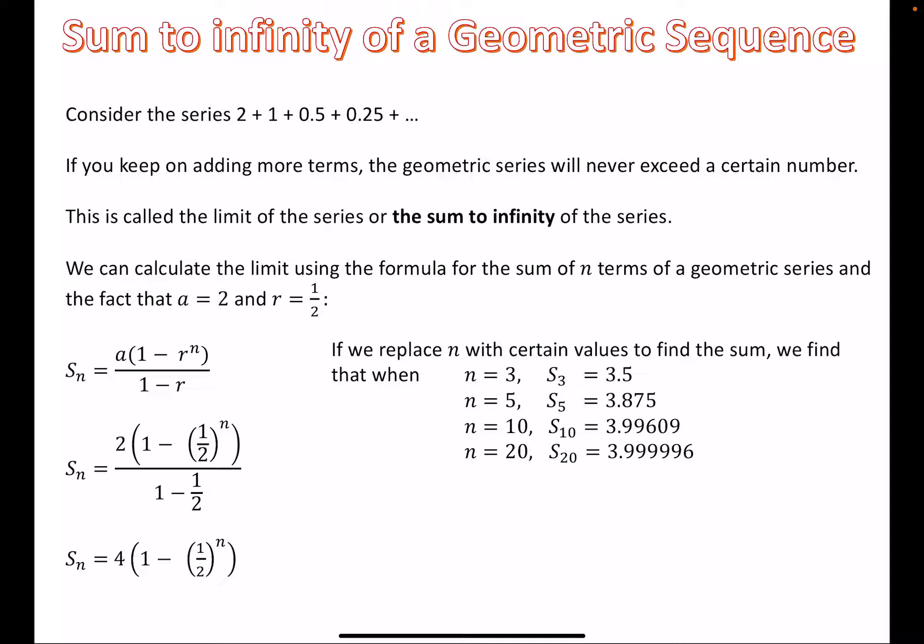So n equal to 3, the sum would be 3.5. n equal to 10, it would be 3.99609 and this number is just not going to get much bigger than that. The sum of the first 20 terms will be 3.999996. So when n gets larger, S_n becomes closer and closer to 4. So we can say that the infinite series is convergent and has a sum to infinity of 4. We don't have to do it like this every single time though.